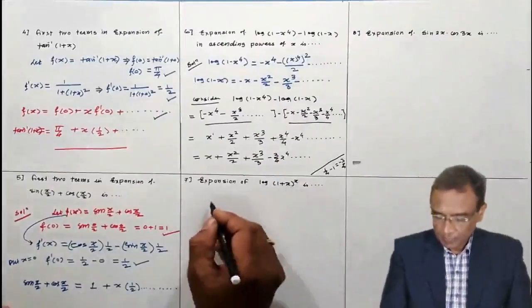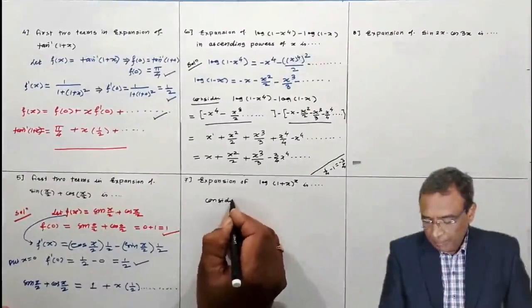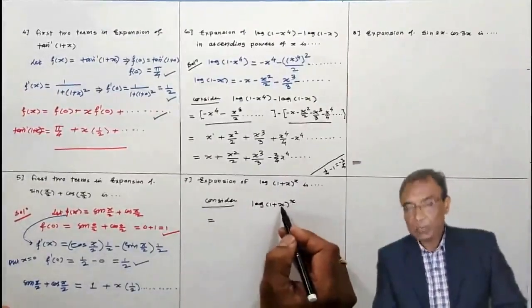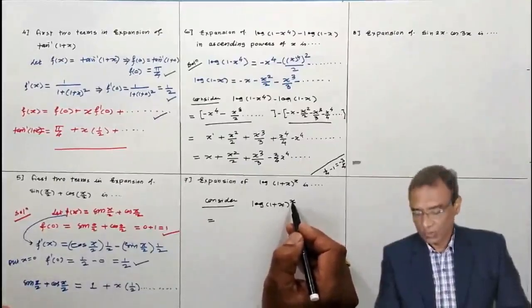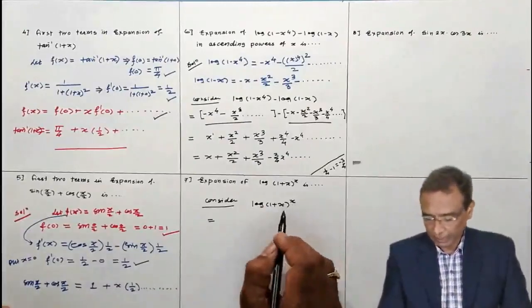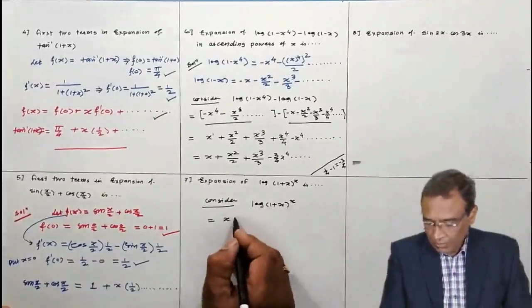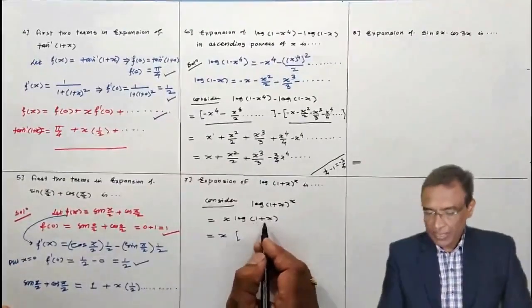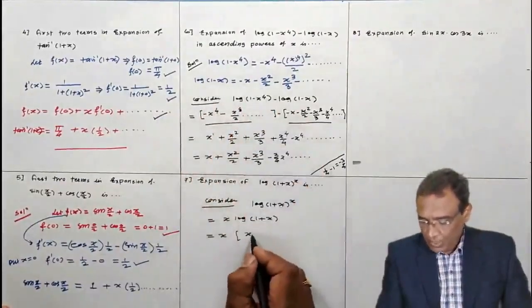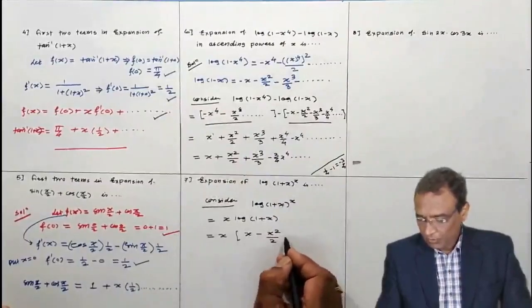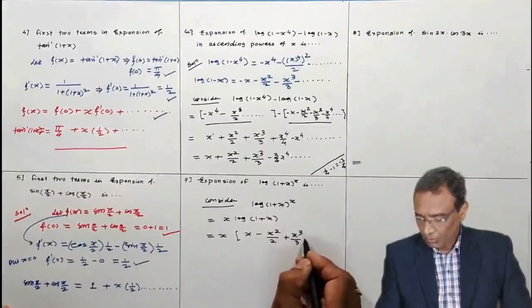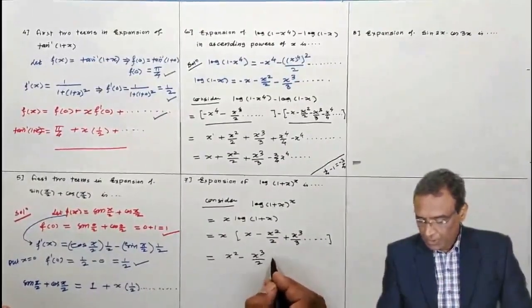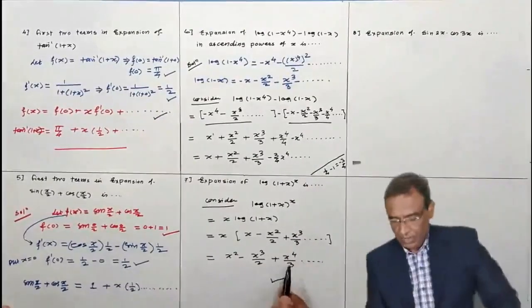Problem 7: Expand log(1+x)^x. By the law of logarithm, bring x to the coefficient: x·log(1+x). Then expand log(1+x) = x − x²/2 + x³/3 − ... and multiply each term by x: x² − x³/2 + x⁴/3 − ...